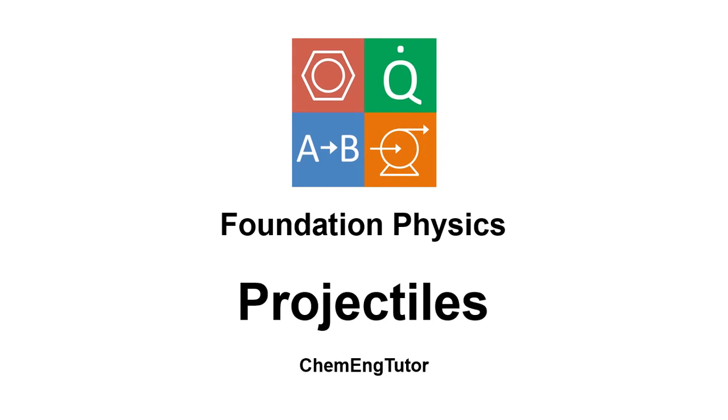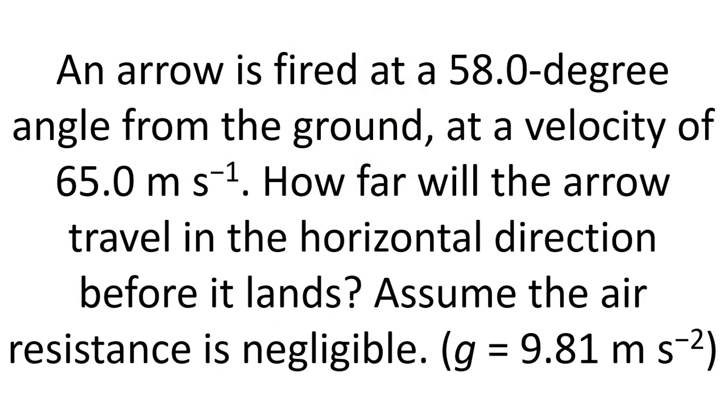In this video I'm going to talk to you about projectiles by answering the following question. An arrow is fired at a 58 degree angle from the ground at a velocity of 65 meters per second. How far will the arrow travel in the horizontal direction before it lands? Assume air resistance is negligible and take G as 9.81 meters per second squared.